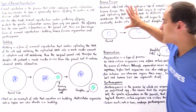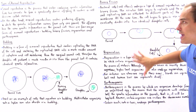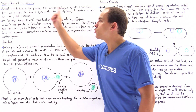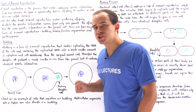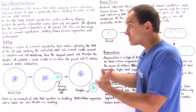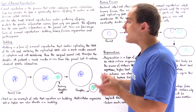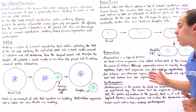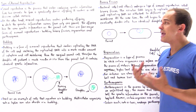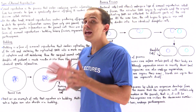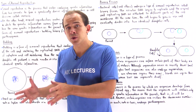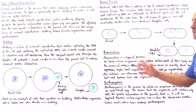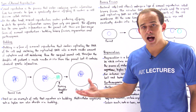In summary, budding, binary fission, and regeneration are three types of asexual reproduction that produce offspring with the same exact genetic information as the parent cell. Parthenogenesis, however, is a type of asexual reproduction in which the offspring does not necessarily have the same genetic information as the parent cell.